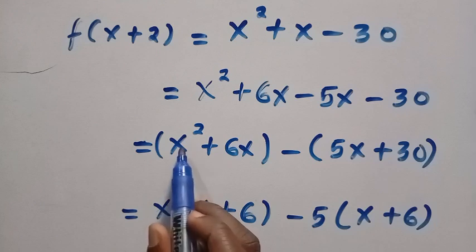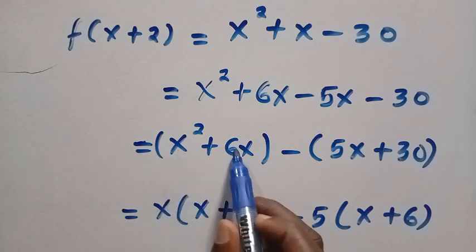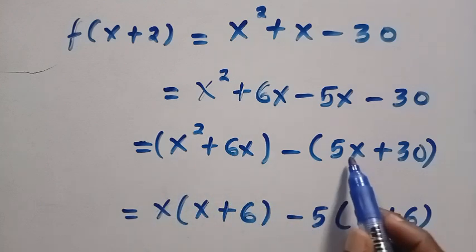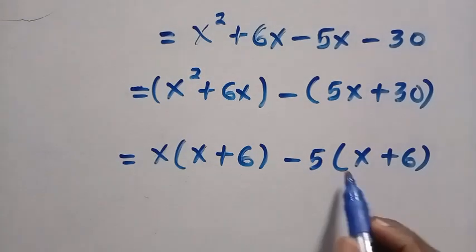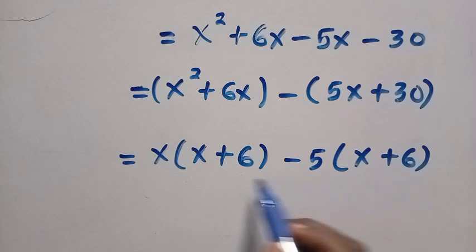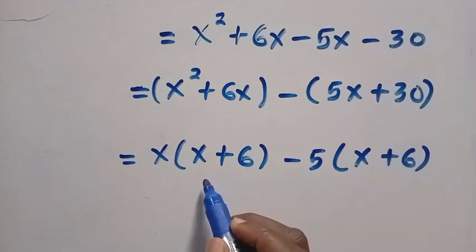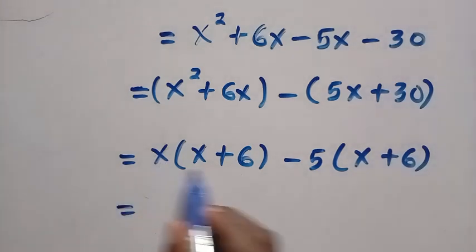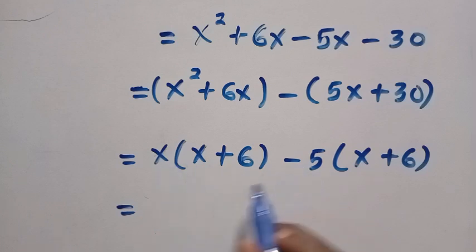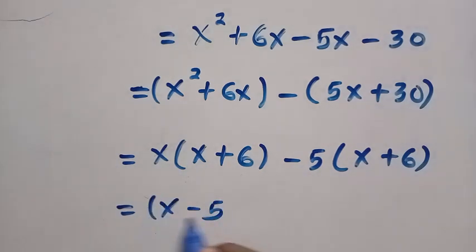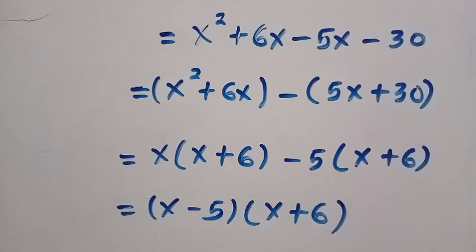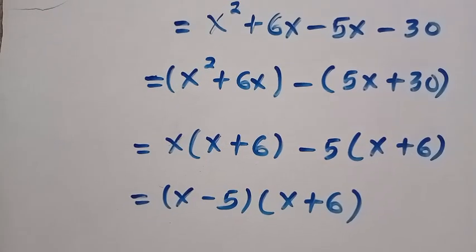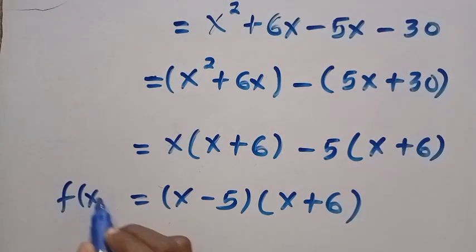So x times x, that is x squared, x times 6, we have it as 6x. Also 5 times x, that is 5x, and 5 times 6, that is 30. Looking at this, we have x plus 6 and this is also x plus 6, which are common. When we take one and combine their coefficients, the coefficients here is x minus 5, and also we have x plus 6. The result of all these are equivalent to f(x+2).